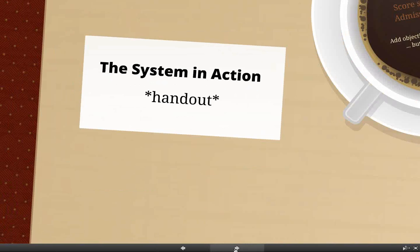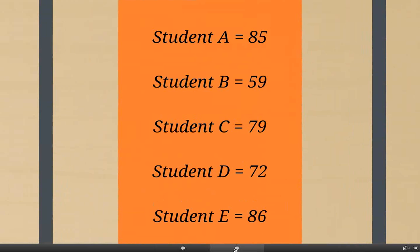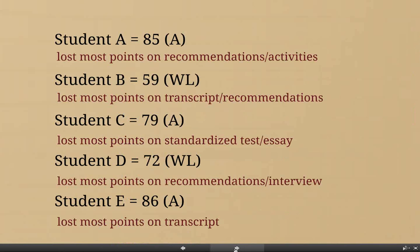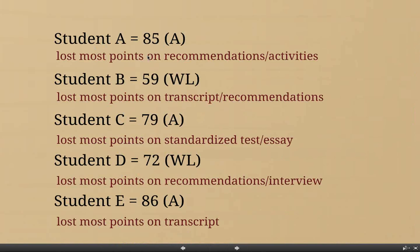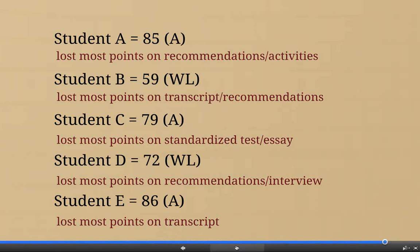I had a handout with some profiles of students we scored. One student that we accepted lost most points on recommendations and activities but still got 85 points — we accepted him. We had a wait-list candidate who had a family tie to the school, which essentially trumped why we wait-listed them versus straight-up denying entry. We put them on the wait list and had a very productive meeting with the family about what they need to do if they want to get in next year. That was kind of the system in action.